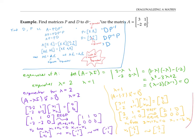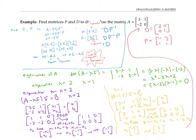Now we're almost done finding P and D. The D matrix is the diagonal matrix made up of the two eigenvalues, 2 and 1. The P matrix is made up of the corresponding eigenvectors — negative one, one and negative one-half, one — noting that the eigenvectors must be in the same order as the eigenvalues they correspond to. I'll leave it to you to verify that P times D times P inverse gives back the original matrix A.